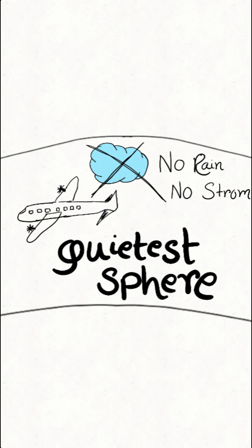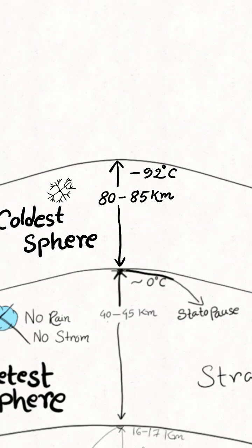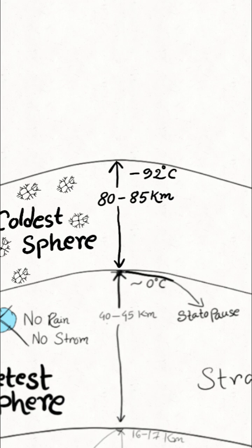Next one is the mesosphere, which is situated 80 to 85 kilometers away from the sea level, and the lowest temperature in mesosphere is minus 92 degrees Celsius. It is known as the coldest sphere of our atmosphere.